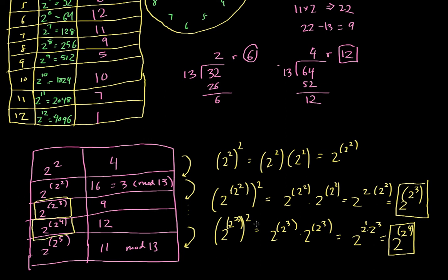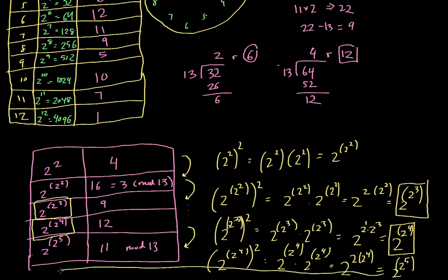Just to complete things, let me show you what happens when I do 2 to the 2 to the 4th and square that. You should expect to see 2 to the 2 to the 5th. You get 2 to the 2 to the 4th times 2 to the 2 to the 4th, which equals 2 to the 2 to the 5th. And again, we get a match.